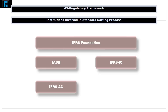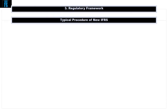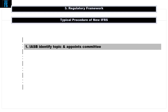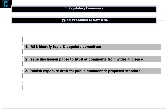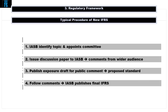As the final topic in this module, let's explore the typical procedure for the development of a new international financial reporting standard. It all starts when the IASB identifies a topic that should be covered and appoints a committee from its members to work on the subject. At some point, when work reaches a stage deemed advanced enough, a discussion paper may be issued by the IASB to encourage comments from a wider audience. The IASB then publishes a so-called exposure draft for public comment, which is also the first draft version of the proposed standard. And finally, following the receipt of comments, the IASB publishes the final text of the new IFRS.